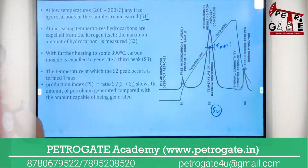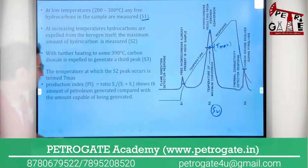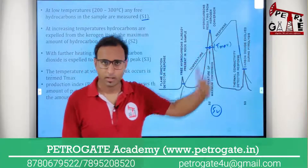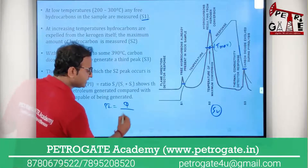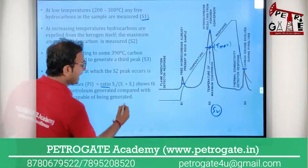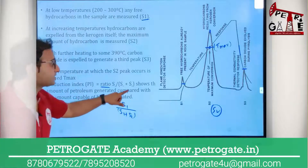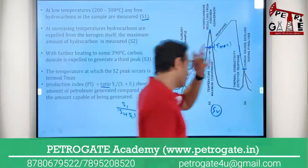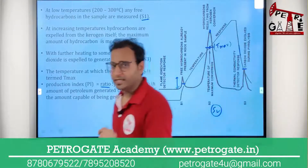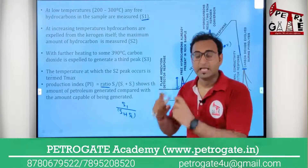The pyrolysis method is also used to find the Productivity Index. This is not the production engineering productivity index (P/P0) — it is different. The Productivity Index is the ratio of S1 divided by (S1 + S2), showing the amount of petroleum already generated compared to the total amount capable of being generated.